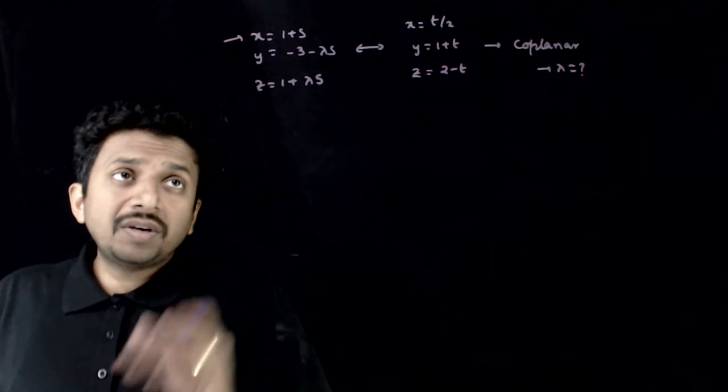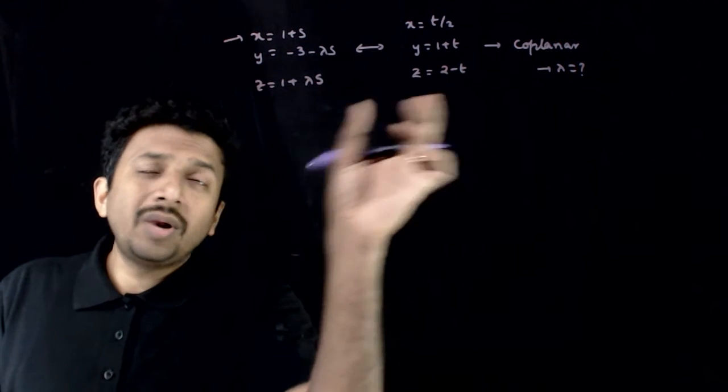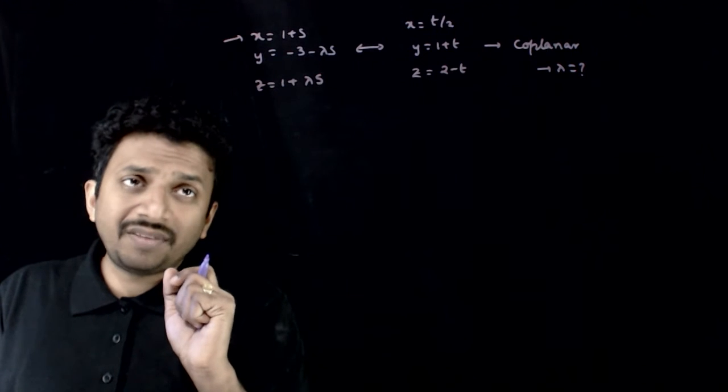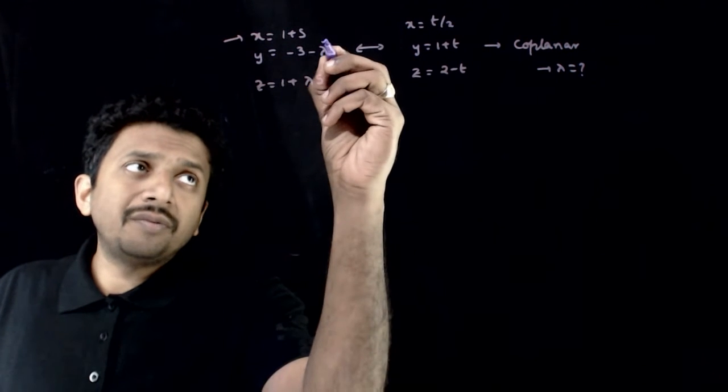Welcome students. In this question, you are given that these two lines are coplanar, and if that is so, you are asked to find the value of the unknown lambda.